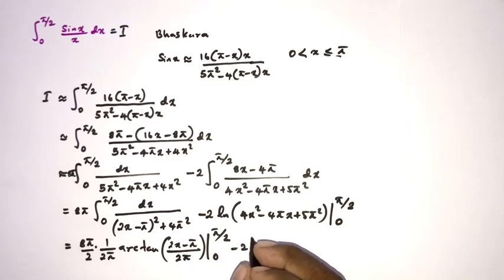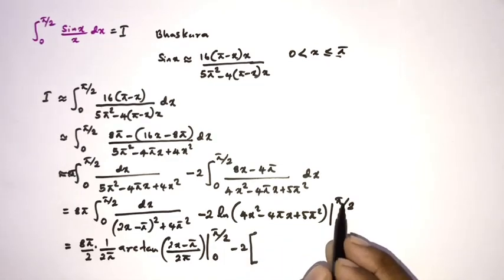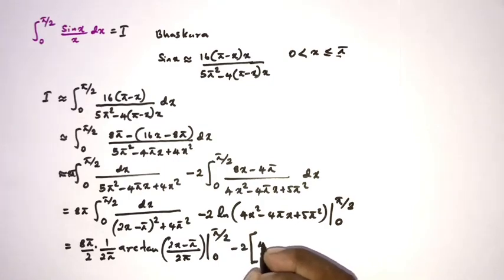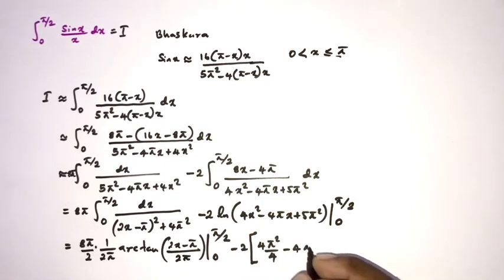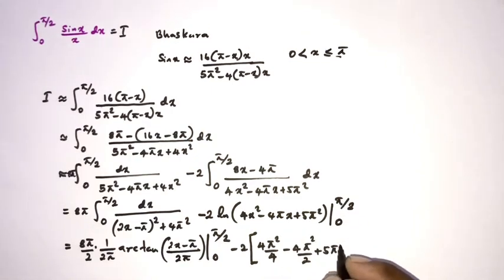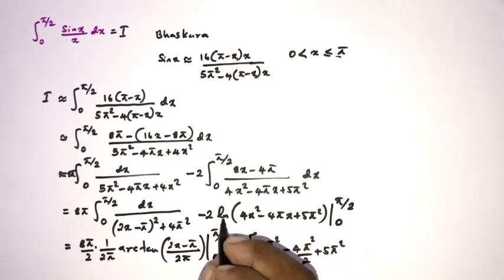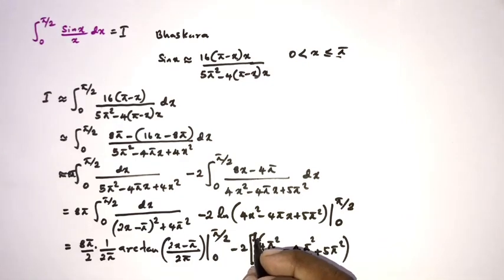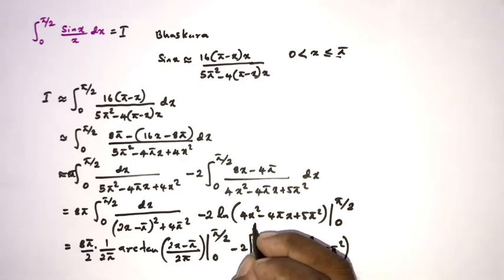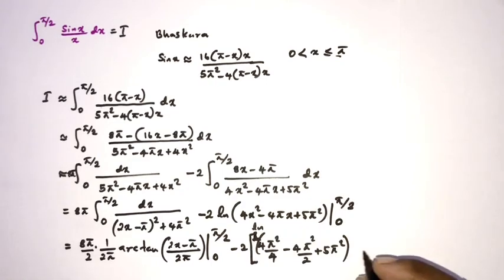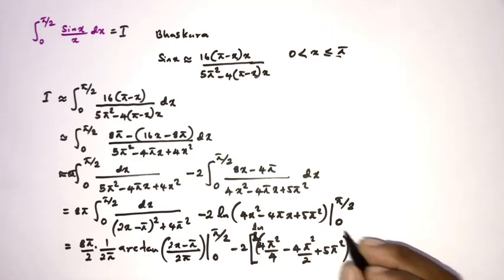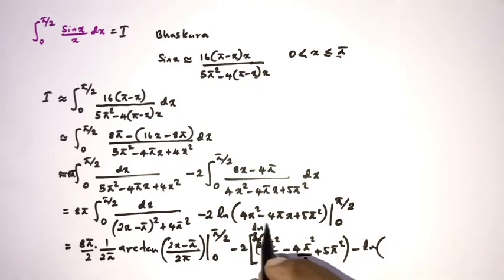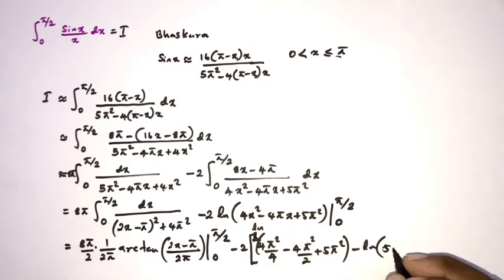Applying the upper bound π/2: we get 4π² × (1/4) − 4π × (π/2) + 5π² for the log term. Applying the lower bound gives natural log of 5π². And for the arctan term, at the upper bound we get arctan(−1/2) from substituting x = π/2.